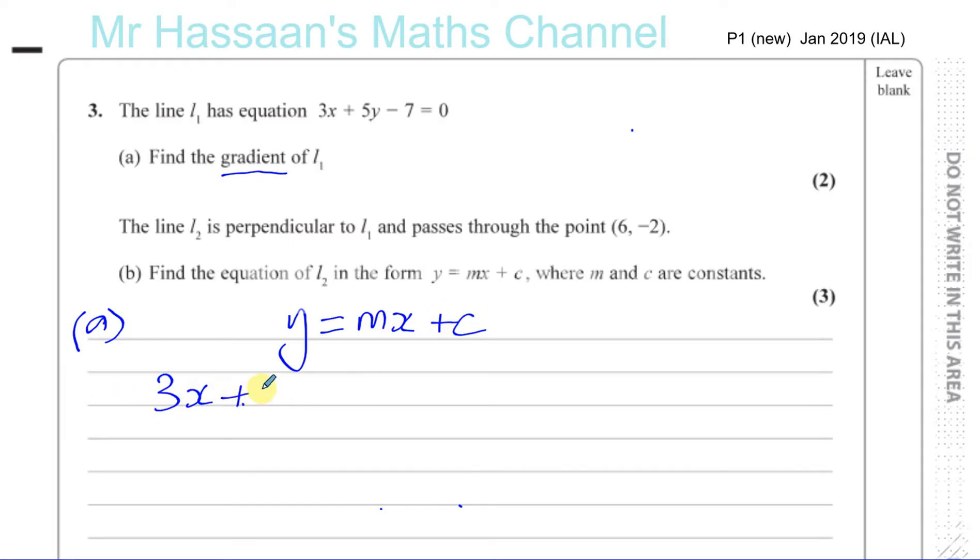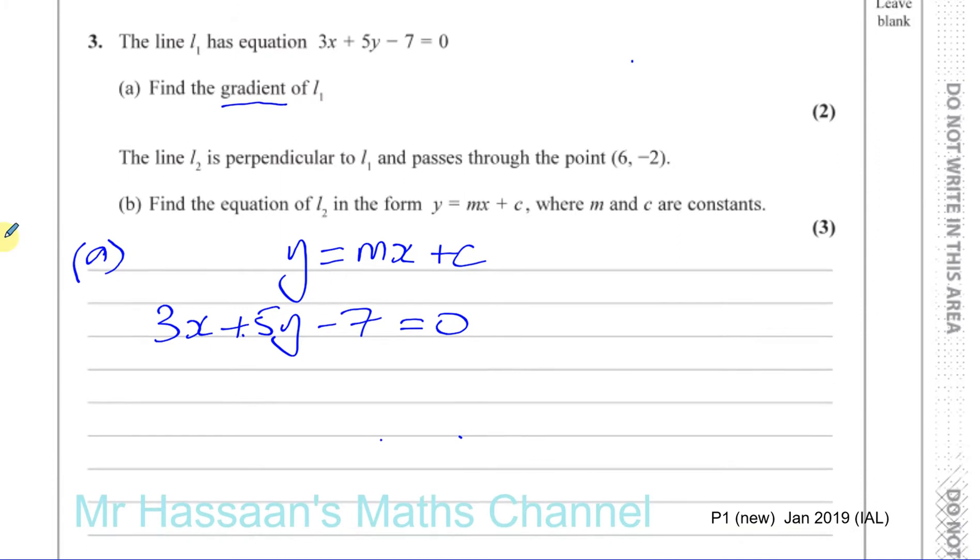So what we need to do is take this equation 3x plus 5y minus 7 equals 0 and make y the subject. I'm going to get rid of the 3x and the minus 7 from this side. So I'll have 5y, and I've got to take away 3x from both sides and add 7 to both sides. I end up with 5y equals minus 3x plus 7.